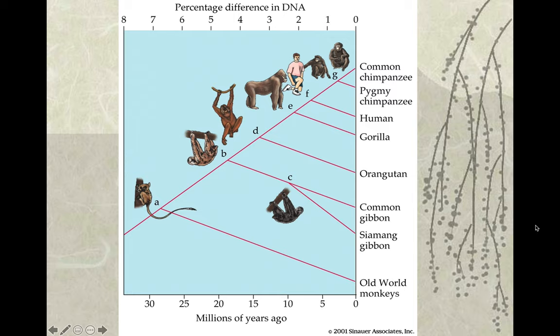The common chimpanzee and the pygmy chimpanzee — another name for the pygmy chimpanzee is the bonobo. Humans are the closest to the bonobo, as weird as that may seem.